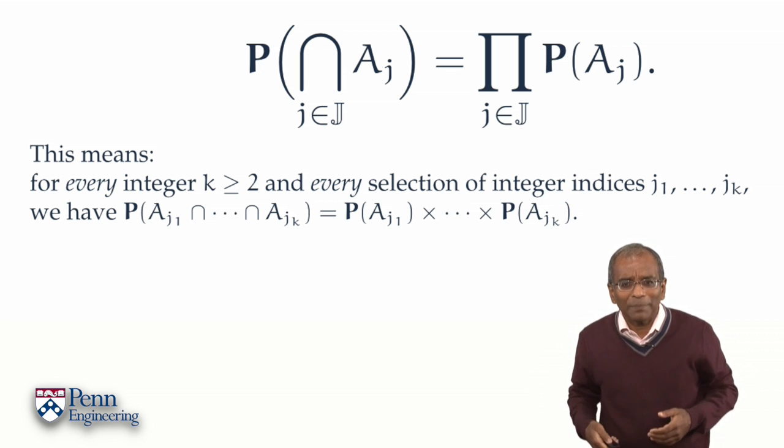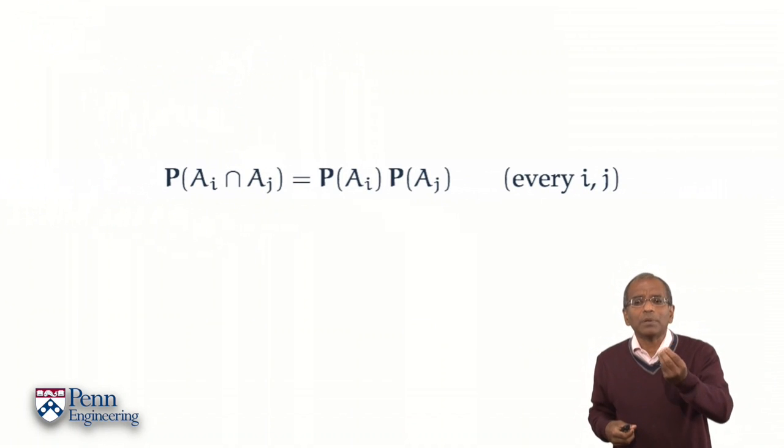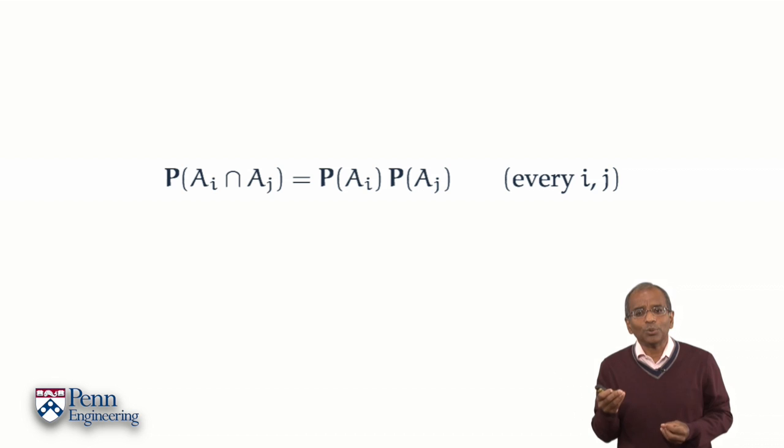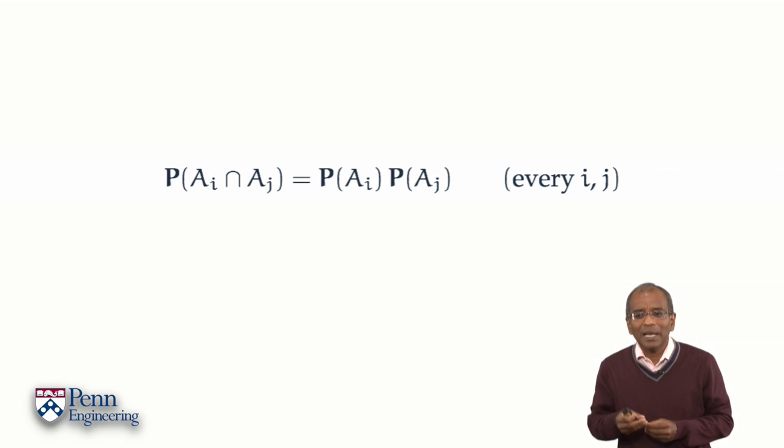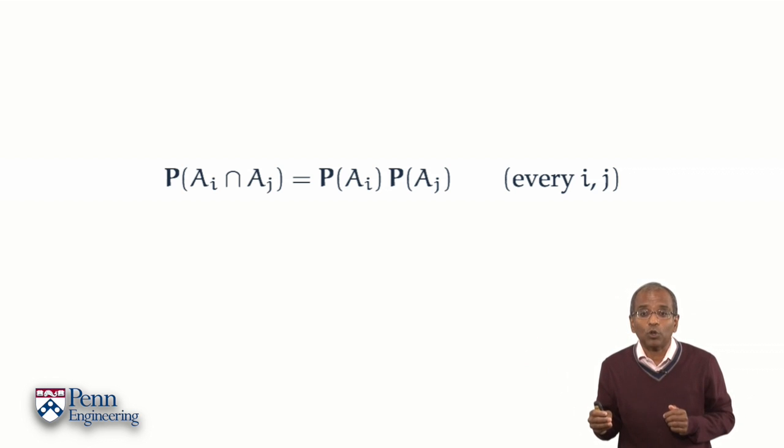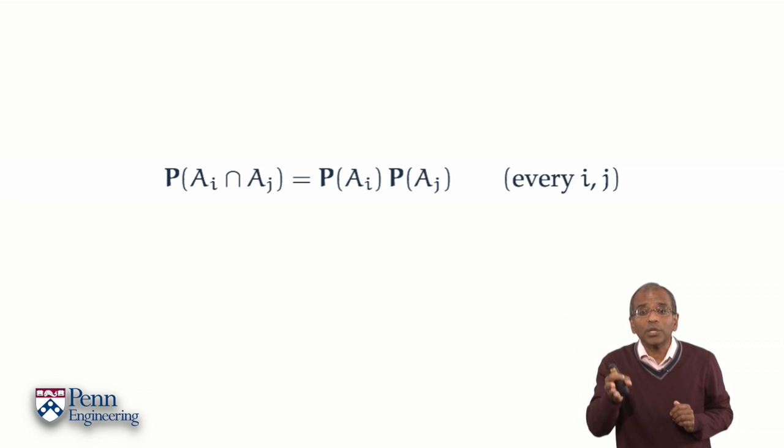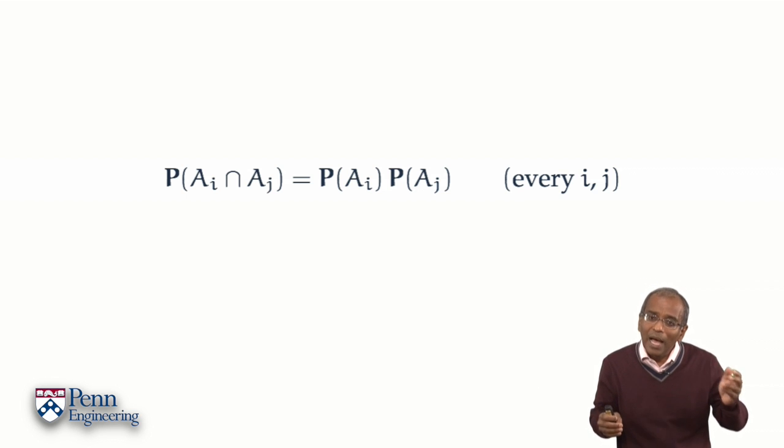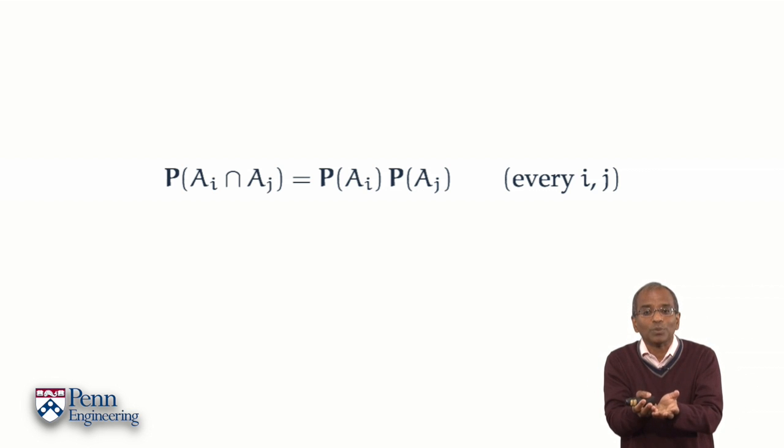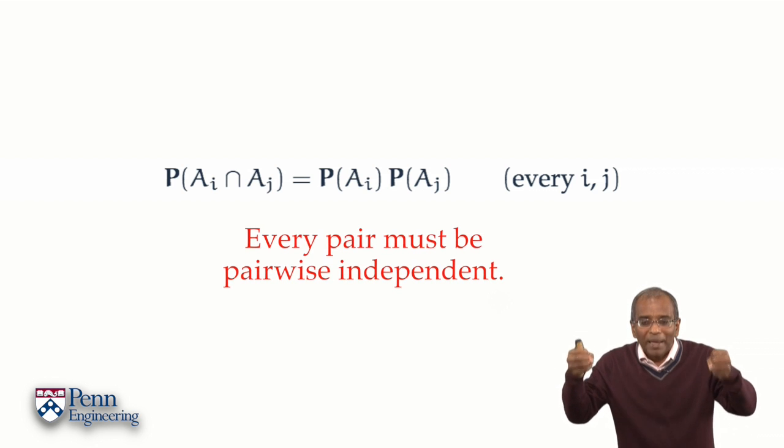Let's flesh it out one more time. This means, if for example, k is 2, that A1 and A2 intersected have a rule of products, A1 and A3 intersected have a rule of products, A1 and A4 intersected have a rule of products, and so on. A3 intersected with A4 satisfies a rule of products, and so on. In other words, all pairwise intersections possible from your finite or countably infinite family must satisfy a rule of products. Every pair of events must be pairwise independent.